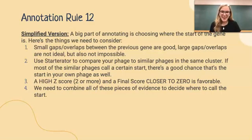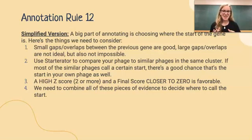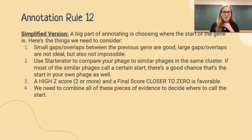Part 3 of rule 12 reads: a high z-score of two or more and a final score closer to zero is favorable. These scores are in reference to something called a ribosome binding site. The math involves standard deviation and other processes, but we're just going to look at the scores the computer programs give. We're looking for z-scores of roughly two or more, and a final score closer to zero — it's usually a negative number — and these are good pieces of evidence in building a case for a particular start.